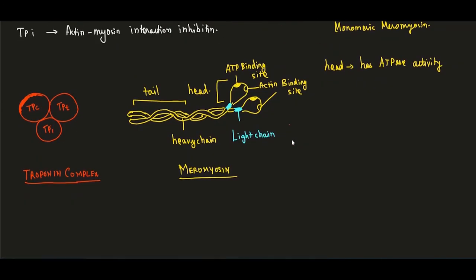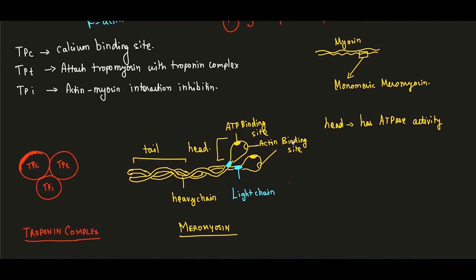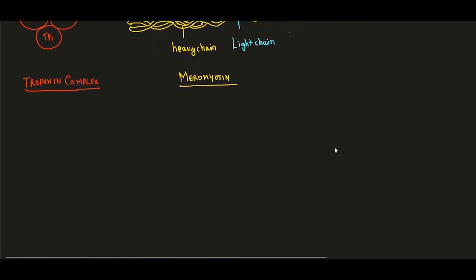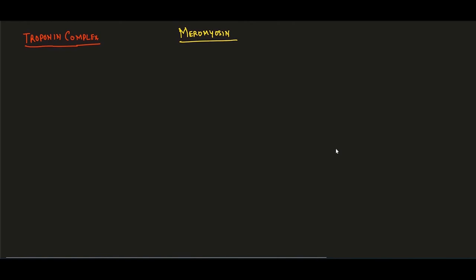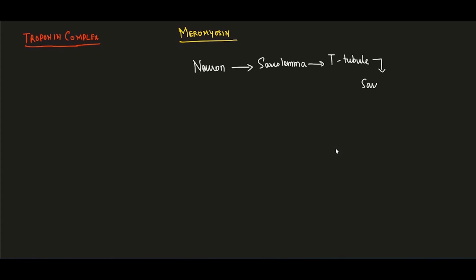Now let us look at the sequence of events during muscle contraction. First, a nerve impulse travels from the neuron to the T-tubule. From the T-tubule, the impulse travels into the sarcoplasmic reticulum. This is the most important step: upon receiving the impulse, the sarcoplasmic reticulum releases calcium ions.